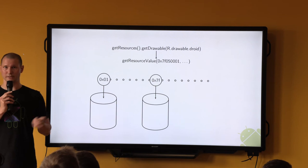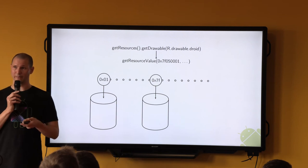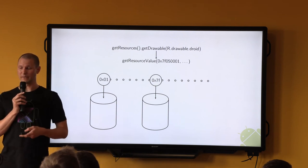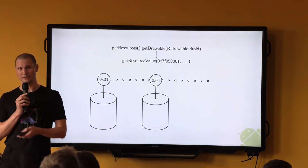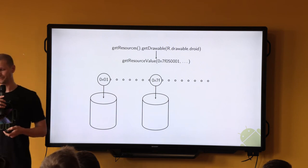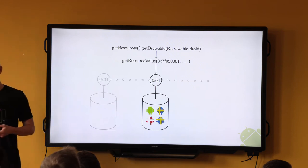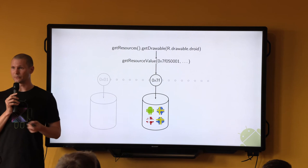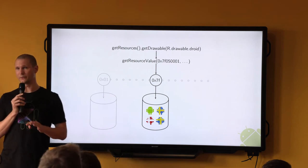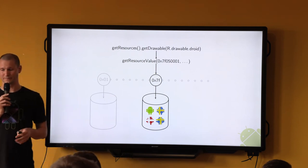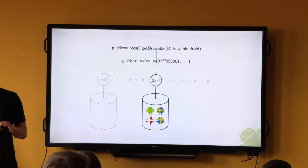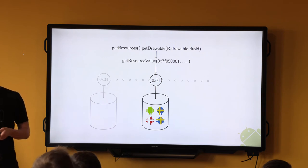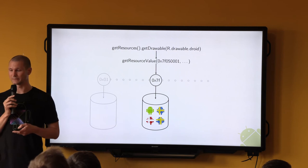In this case it's 0x7f, and 0x7f means the regular application package. In this example, the resource we're looking for happens to be defined in four different versions. The framework will pick one of these versions and return that to you. Let's deep dive and see how it actually does that.